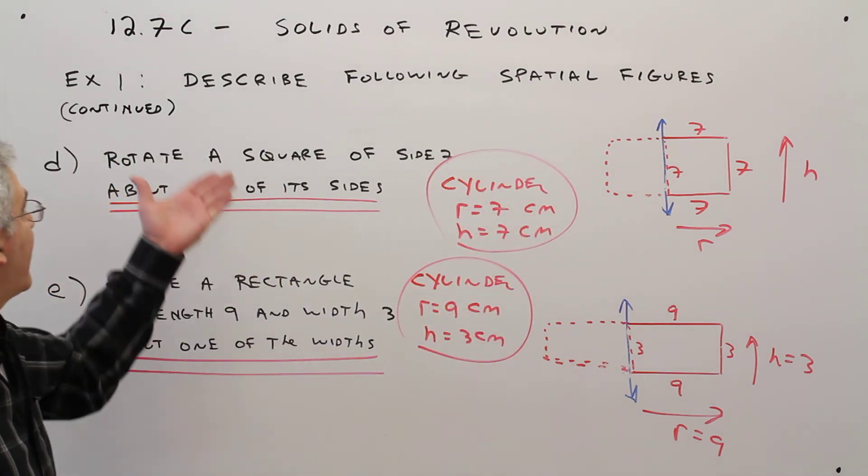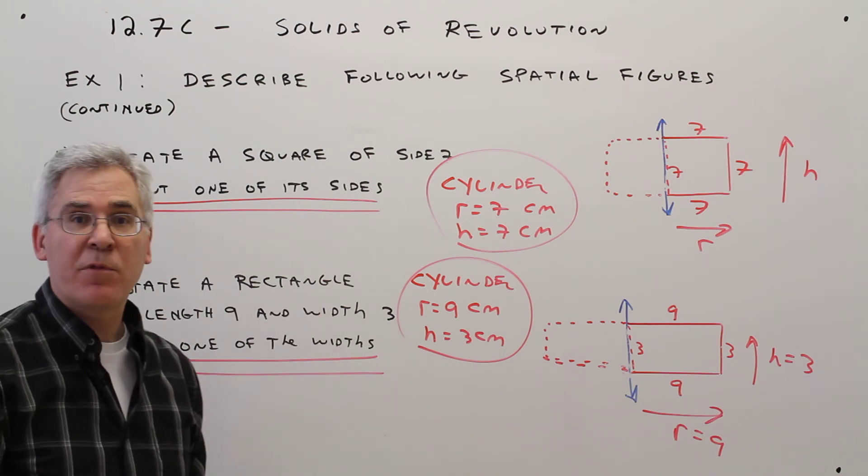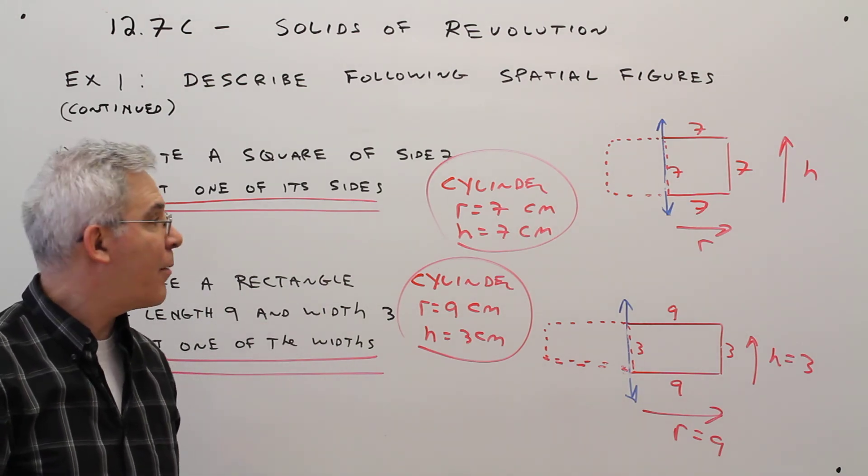And there you have it. Two more solids obtained by rotating a plane geometric figure.